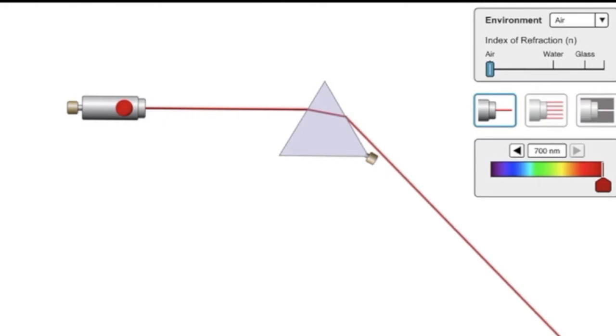So to understand that, let's have a look at what happens to the different colors as they enter the prism. So as I change the color of the light, can you see what happens to the direction of that light?